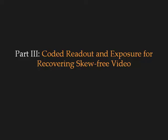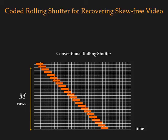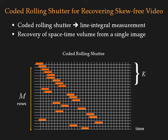In the third part, we show that it is possible to use coded rolling shutter to recover the space-time volume from a single image using compressive sensing. In this application, both the readout and exposure for each row are set randomly. Each pixel in the input image corresponds to a line integral measurement of its appearance over time. By controlling the coding patterns and trading off vertical image resolution, it is possible to recover the space-time volume — or in other words, the skew-free video — from a single image. Please refer to the paper for details.